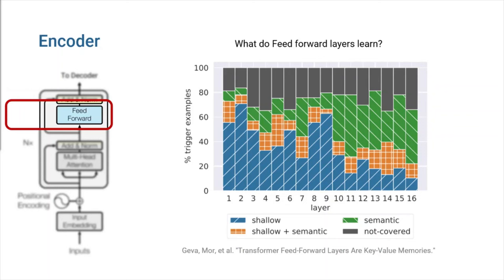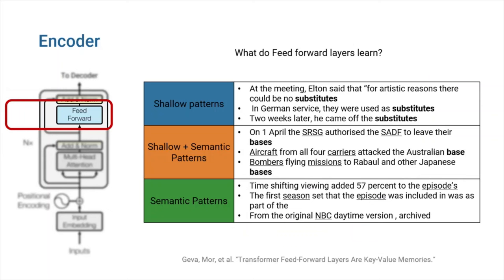As you can see in this figure, neurons in lower layers often capture shallow patterns, while higher layers capture more semantic ones. I'm going to use some examples to help you comprehend these patterns better. Several sentences can be seen here, and the feed-forward network of the transformer model appears to have connected them. Shallow patterns are the ones that come from the words themselves. For example, all the sentences shown in the first row of this chart have substitutes at the end of them. Semantic patterns, on the other hand, are the meaning you induce from the sentence by looking at its words. In the second row of this chart you can see sentences that end with base or bases, but also are related to military because of the presence of underlined words.